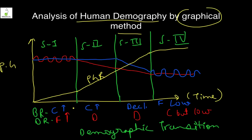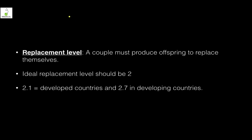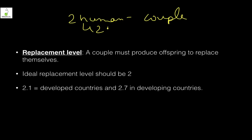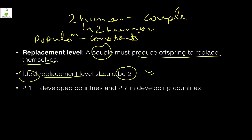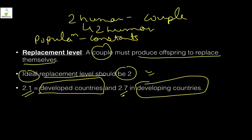The replacement level is when a couple produces enough offspring to replace themselves so the population remains constant. Ideally two, but since some babies will die before reproducing, the replacement level is 2.1 in developed countries where infant mortality is low, and 2.7 in developing countries — though this is decreasing and is now close to 2.4-2.5.